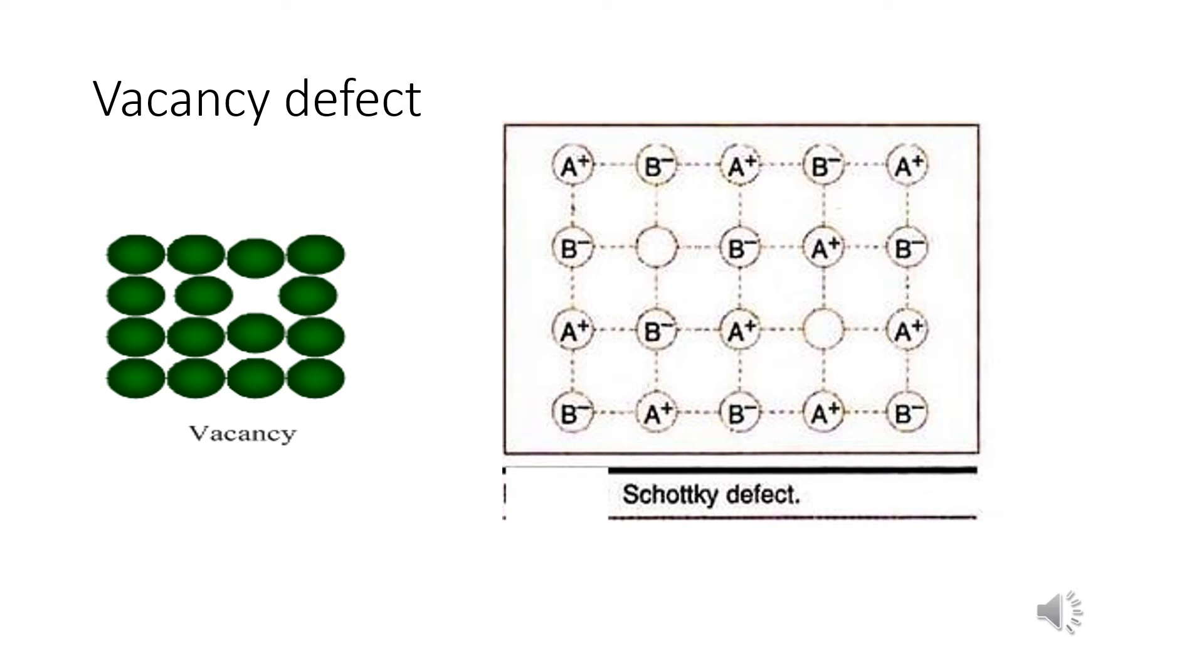In sodium chloride crystal, there are approximately 10 to the power 6 Schottky pairs per centimeter cube at room temperature. In centimeter cube, there are about 10 to the power 22 ions. Thus, there is one Schottky defect per 10 to the power 16 ions. In Schottky defects, cations and anions are in similar size.